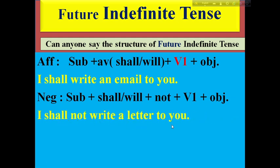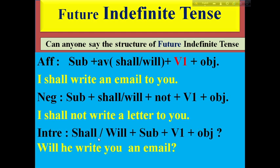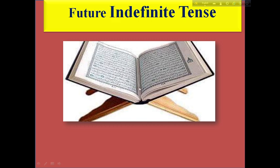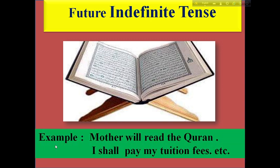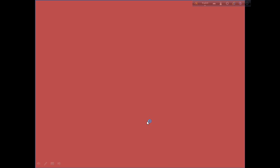Example: I shall not write a letter to you. The interrogative structure: at first we use shall or will, then subject, main verb present form, and lastly object. Example: Will he write you an email? Look here — it is a picture of the Holy Quran. For example: Mother will read the Quran. I shall pay my tuition fees. These are examples of future indefinite tense.